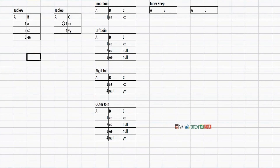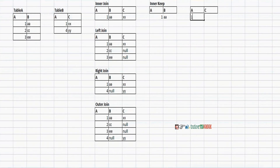For inner keep: for record 1 there is a matching condition — in Table A it shows '1 A A' and in Table B it shows '1 X X'. For records 2 and 3 there is no matching condition, so they are excluded. The tables remain separate.